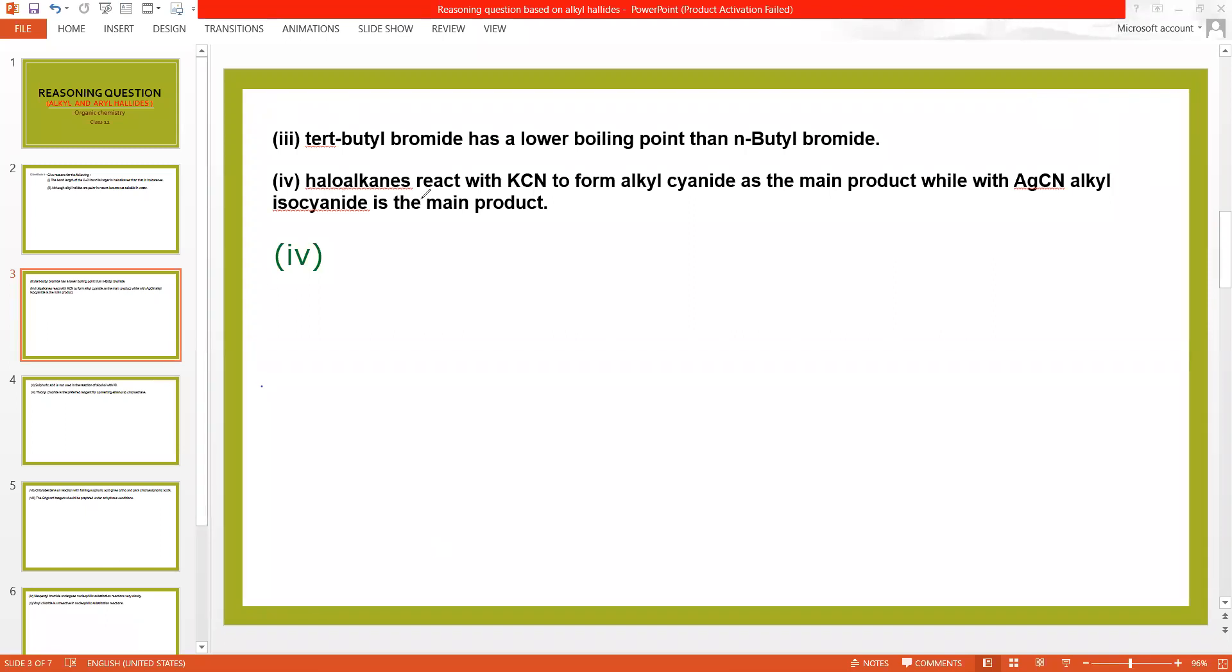Reason number four. Alkyl halides react with KCN to form alkyl cyanide. KCN dissociates to form potassium and cyanide ions, while AgCN is a covalent molecule. In AgCN electron pair of nitrogen is free, while in case of KCN whole cyanide gets detached from potassium, so main contribution will be due to electrons of carbon.